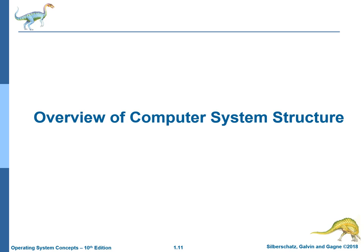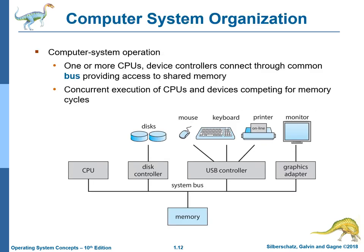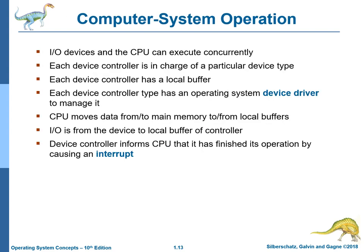We have an overview of computer system structure. Computer system operation involves one or more CPUs and device controllers connected through a common bus providing access to shared memory, with concurrent execution of CPUs and devices competing for memory cycles. Input-output devices and the CPU can execute concurrently. Each device controller is in charge of a particular device type and has a local buffer. Each device controller type has an operating system device driver to manage it. The CPU moves data from or to main memory to or from local buffers. A device controller informs the CPU that it has finished its operation by causing an interrupt.